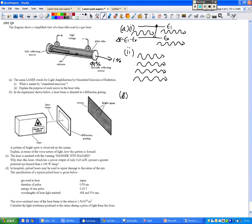An experiment shown below, a laser beam is directed at a diffraction grating. A pattern of bright spots is observed on the screen. Explain in terms of the wave nature of light how this pattern is formed. That's going back to the whole diffraction grating thing that we've looked at.